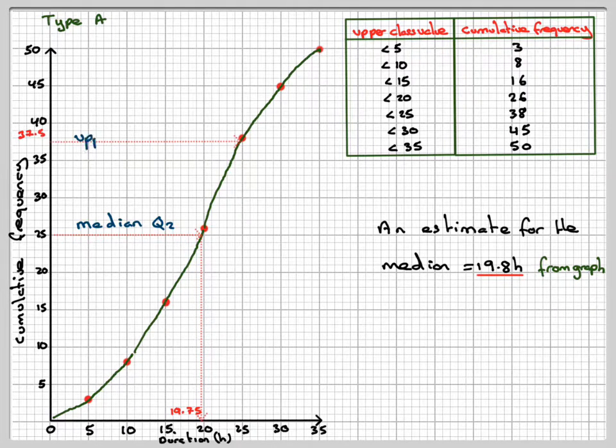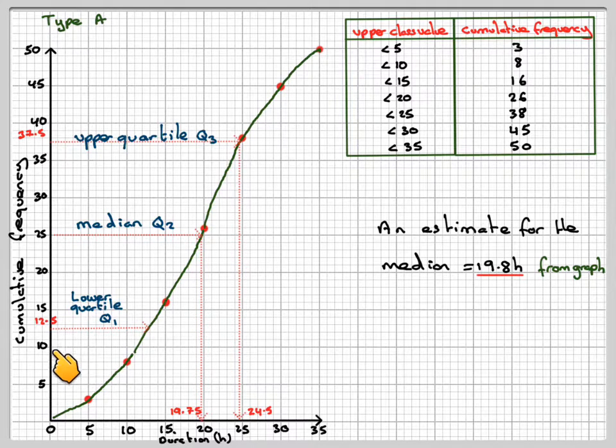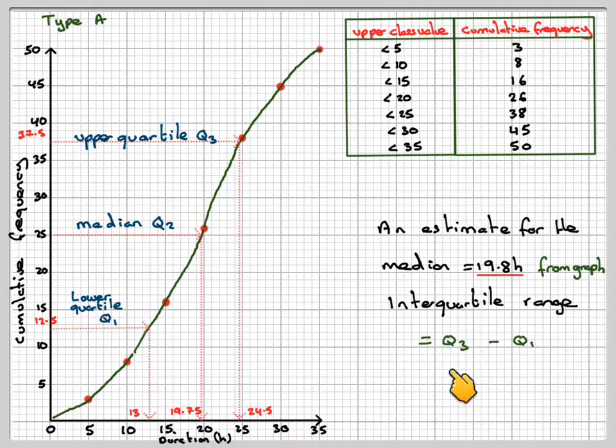Now the interquartile range, we need first of all to find the upper quartile. So 3 quarters of 50 is 37.5. So the upper quartile Q3, reading along the graph and then down, we're going to get 24.5. And then 1 quarter of 50 is 12.5. So the lower quartile Q1, reading along the graph and then reading down, we get 13. The interquartile range, IQR, is going to be Q3 minus Q1. So this value minus this value, which is 24.5 minus 13, which gives me 11.5.